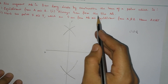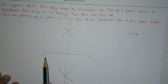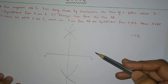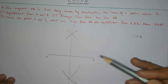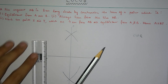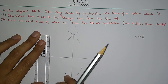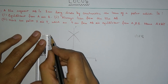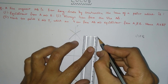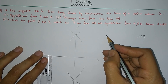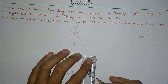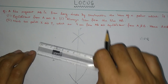Question number two: the locus of points always 4 cm from line AB. In the previous video I told you that the locus of a point equidistant from a line is a parallel line above it and a parallel line below it at equal distance. Here the equal distance is 4 cm, so we construct two lines 4 cm from the line AB — measuring 4 cm above at multiple points and 4 cm below, keeping the scale straight.